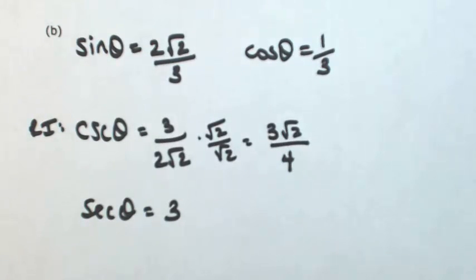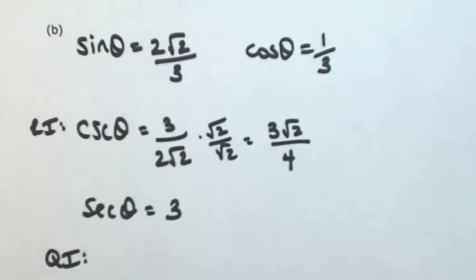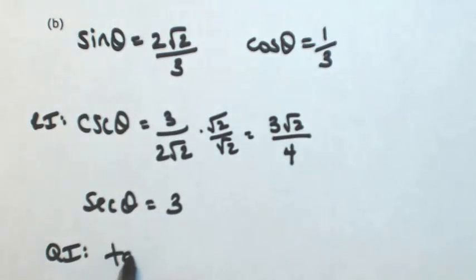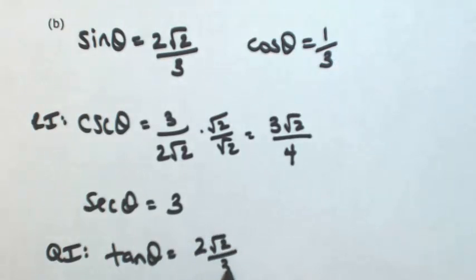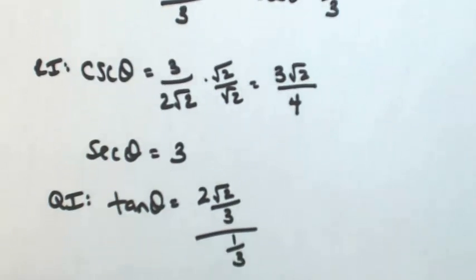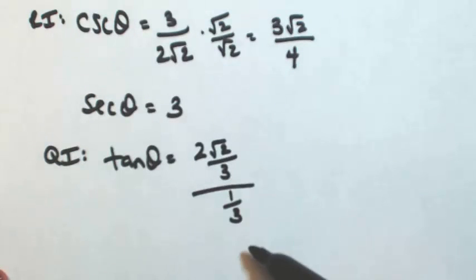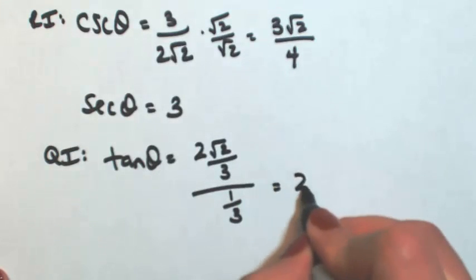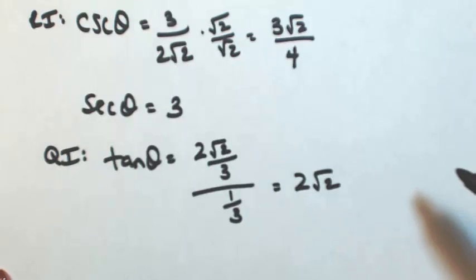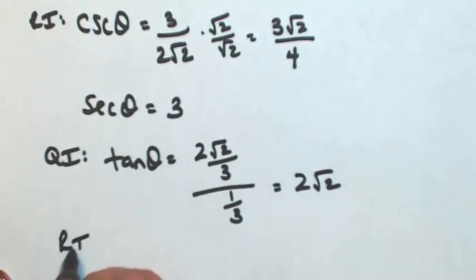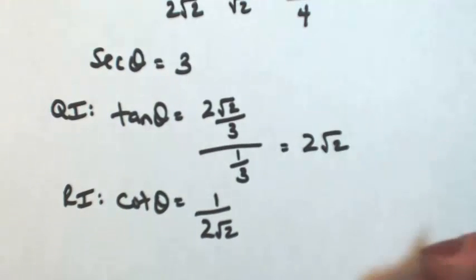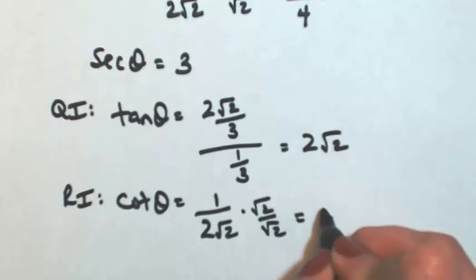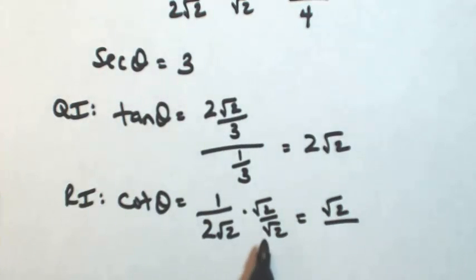We've exhausted the reciprocal identities, so let's move on to the quotient identities. Since we know sine and cosine, we know tangent, which is defined as sine over cosine. Dividing top and bottom by the same thing, those cancel out, leaving us with 2√2. Then cotangent can be found using the reciprocal identity, since it's the reciprocal of tangent — so 1 over 2√2. Rationalizing, the bottom becomes 2 times 2, which is 4, giving us √2 over 4.